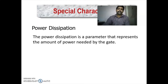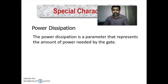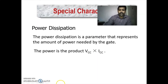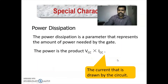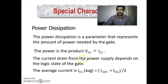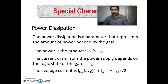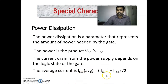Power dissipation is a parameter that represents the amount of power needed by the gate for operation. Power is the product of VCC and ICC, where VCC is the supply voltage and ICC is the current drawn by the circuit. The current drawn from the power supply depends upon the logic state of the gate — either 0 or 1.